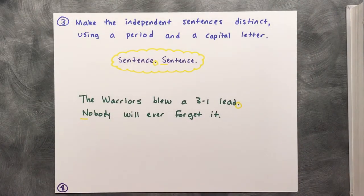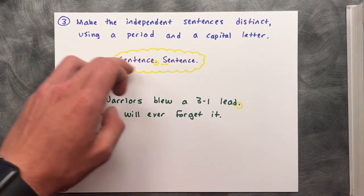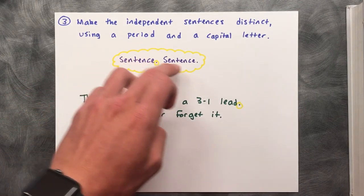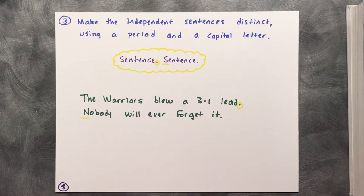The third method is to make independent sentences distinct using a period and a capital letter. For example: 'The Warriors blew a 3-1 lead. Nobody will ever forget it.'